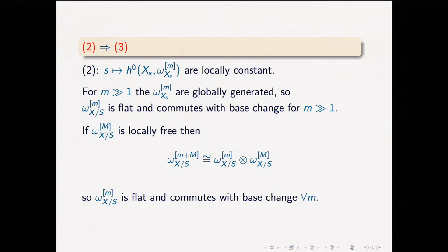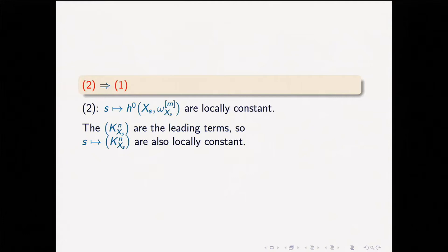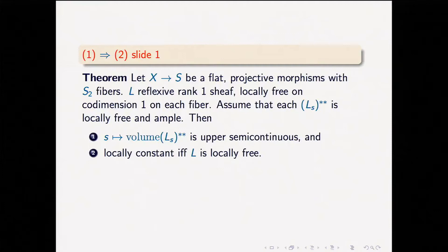2 implies 1 is probably the easiest. Assuming H0 is locally constant, by the weakest version of Riemann-Roch, the volume is just the leading term of the Hilbert polynomial as M goes to infinity. So if H0 is locally constant, the leading term is also locally constant. The converse is actually very surprising: if the leading term of the Hilbert polynomial or Hilbert function is locally constant, the rest of the coefficients also have to be locally constant automatically.